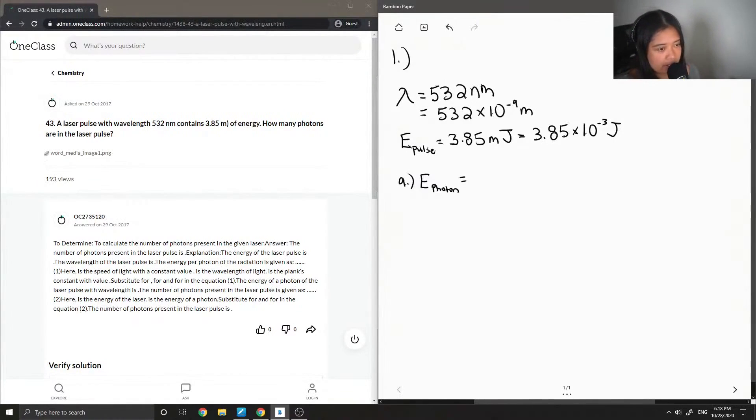To do that we use the equation E equals hc over lambda. h is Planck's constant and its value is 6.626 times 10 to the negative 34 joules times seconds. This is why I converted everything to joules so that we can use constants like this.